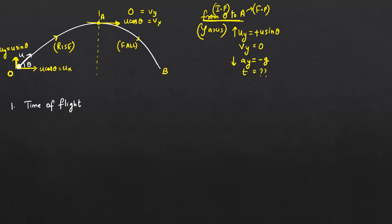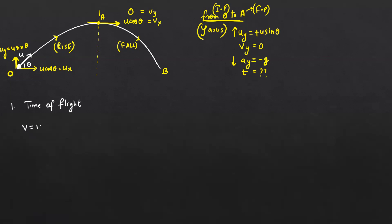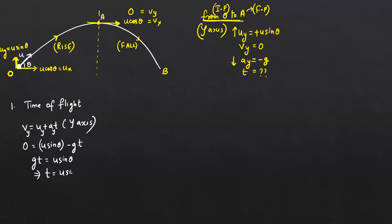Using the equation v = u + at along the y-axis: v_y = u_y + a_y·t gives 0 = u sinθ − g·t, so t = u sinθ / g. This is the time of ascent — the time taken for the body to travel from O to A.